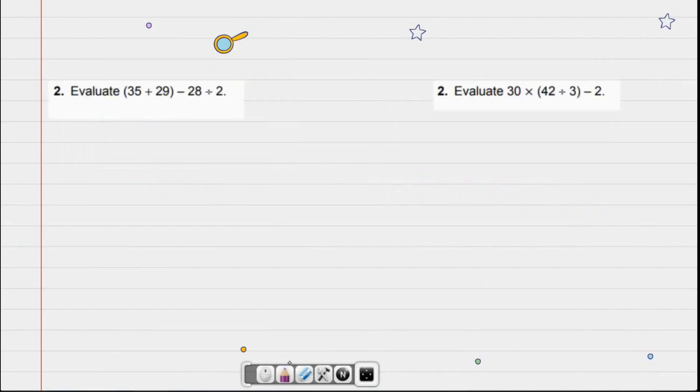Number 2 says evaluate (35 + 29) - 28 ÷ 2. Wow, that's a lot. So where do we start? I'm going to write PEMDAS and we're going to follow the order of operations. Where do we start? Parentheses. So yes, we're going to start there. 35 + 29 is what? Well, 35 + 29... 9 + 5 is 14. I'm going to carry the 1. 3 + 2 is 5, plus 1 more is 6.